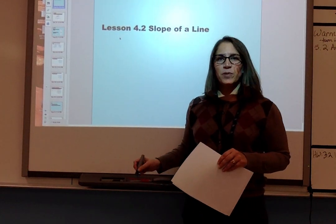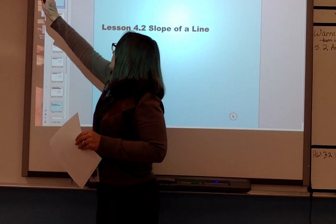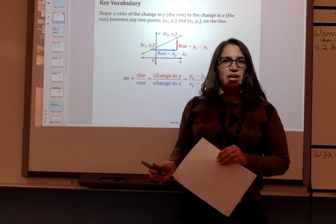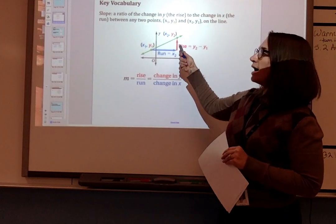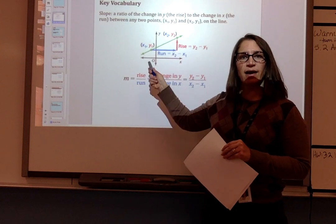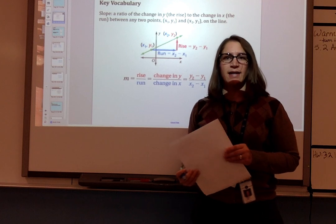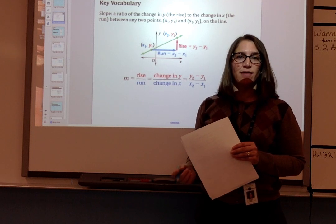Hey students, today's lesson is on slope of a line. To get started, let's do some key vocabulary. The slope is a ratio of the change in y, or the rise, to the change in x, or the run, between any two points, which we can call x1y1 and x2y2 on the line.